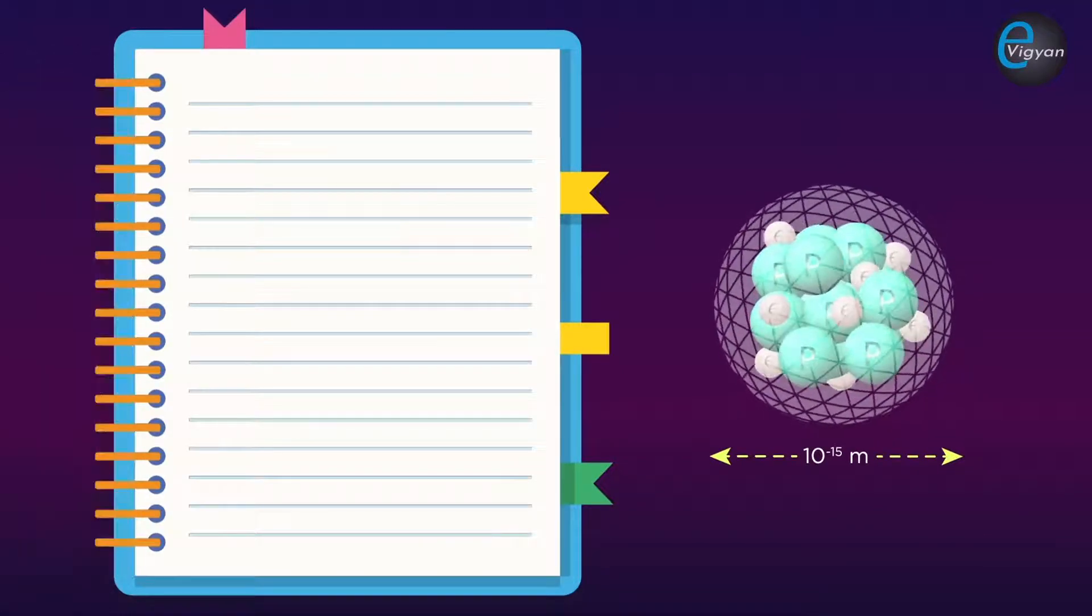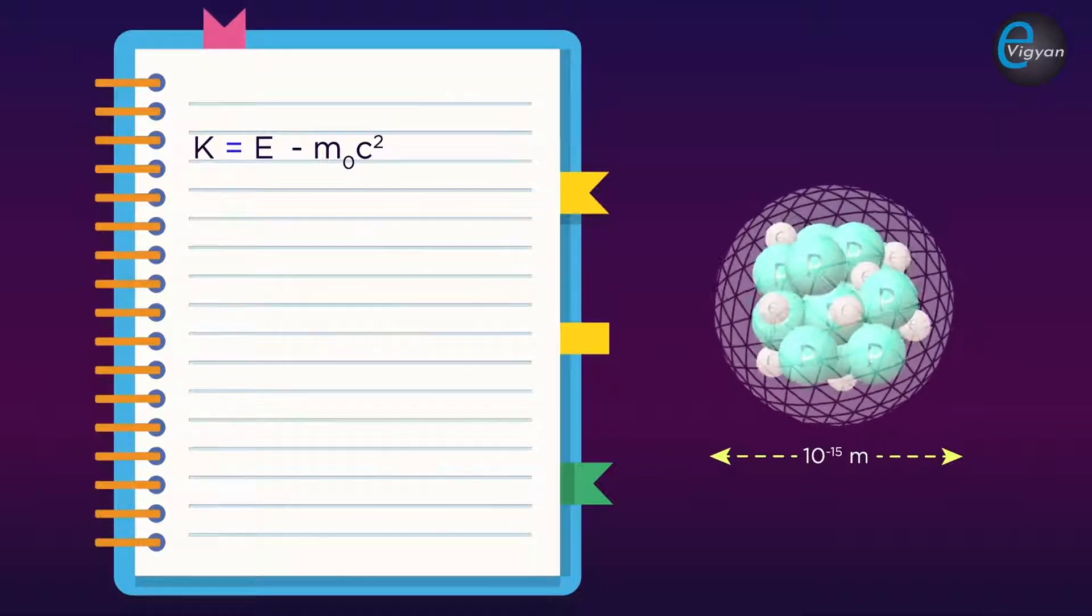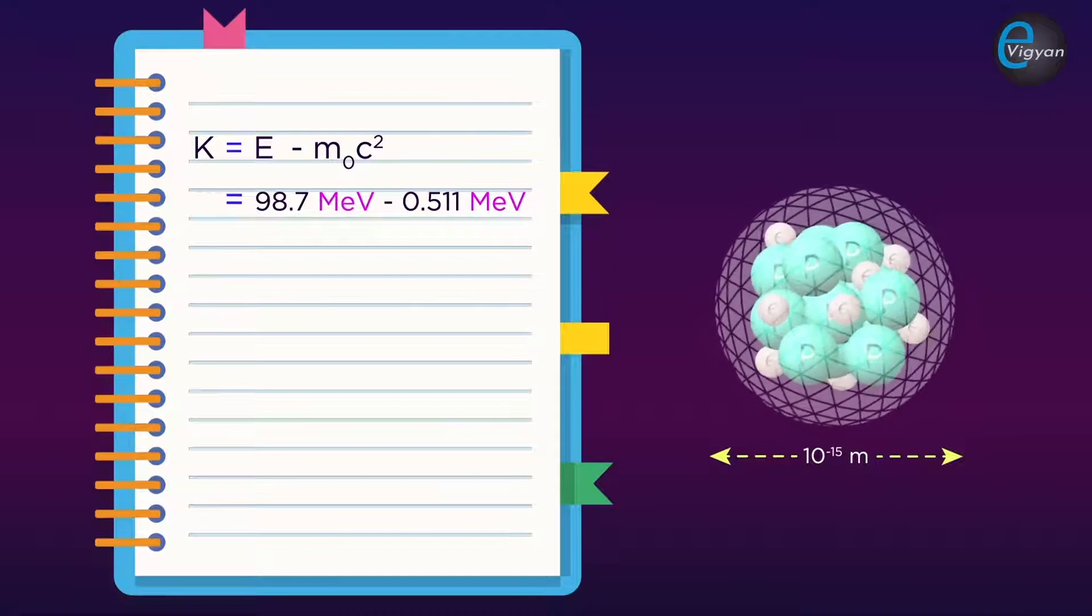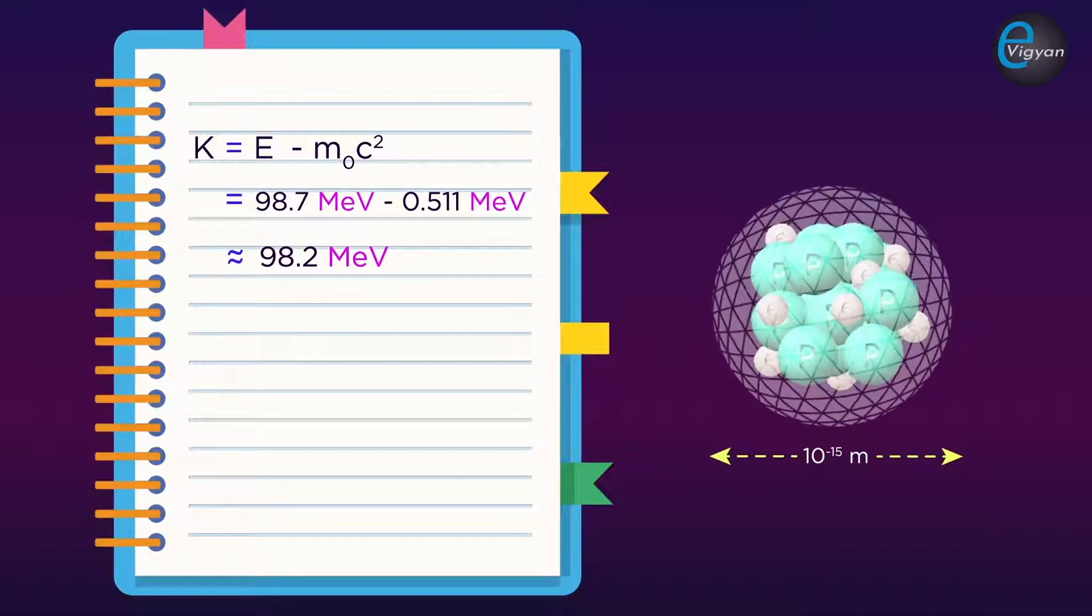And the kinetic energy of the electron will be K equal to E minus m₀c², which is equal to 98.7 MeV minus 0.511 MeV, and that will be equal to 98.7 MeV.